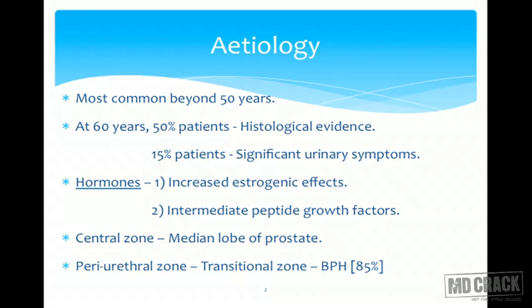There are few hormones which play an important role. As age advances, the testosterone effect will go down and there will be a weak estrogenic effect coming up. Because of this, there is a change in the prostatic architecture. Plus, intermediate peptide growth factors are also contributory towards development of benign prostatic hyperplasia, henceforth referred to as BPH.